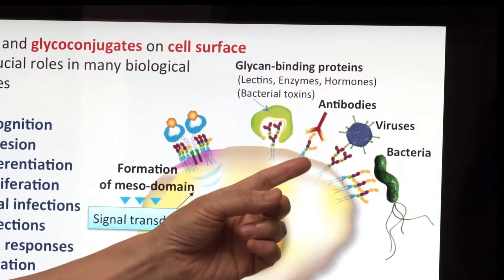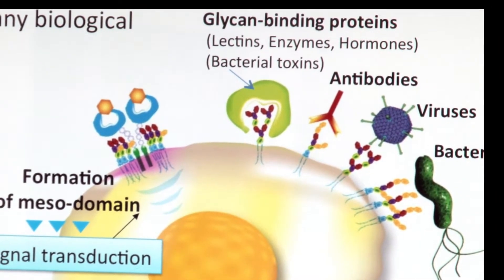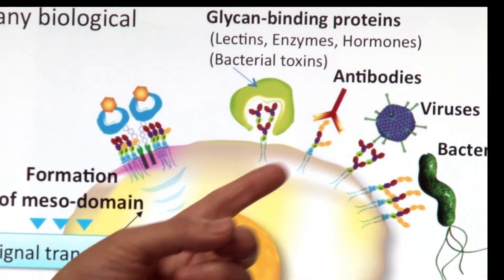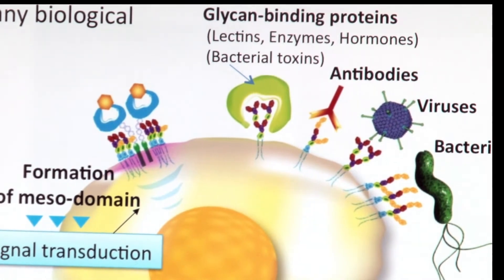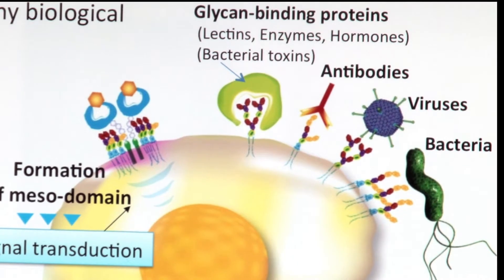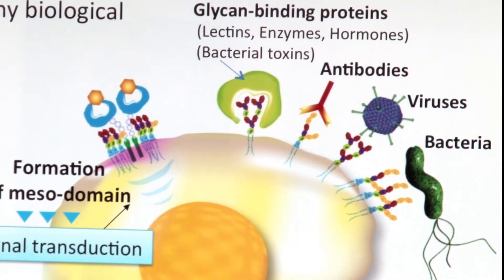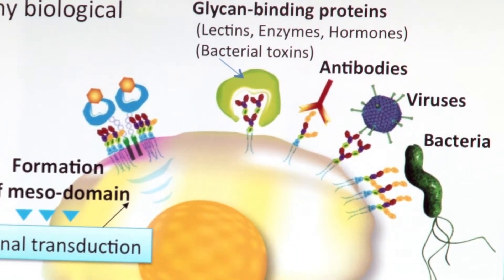For example, sialic acid containing glycans, so-called sialoglycans, are crucial for influenza virus infection. Based on this finding, typical anti-influenza virus drugs Tamiflu and Relenza were developed.